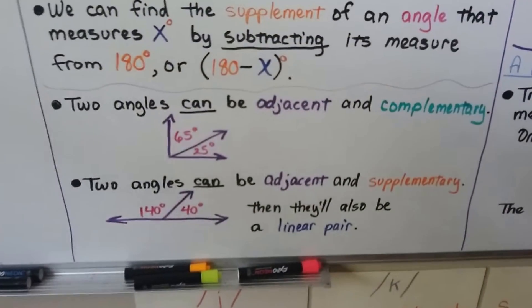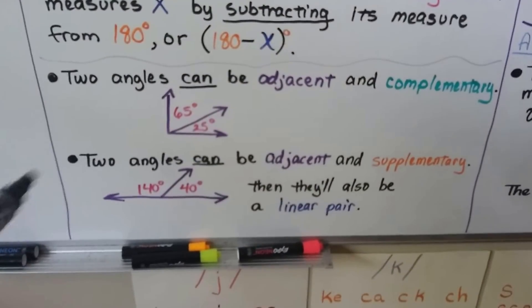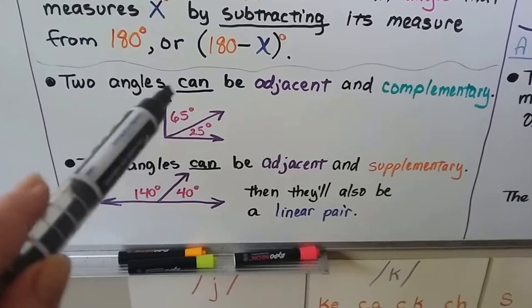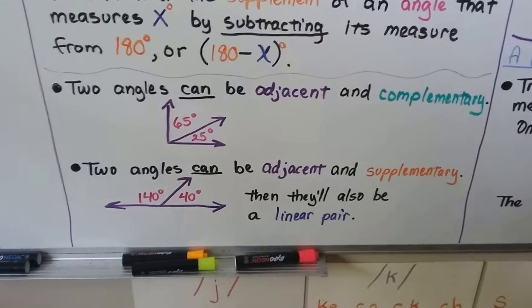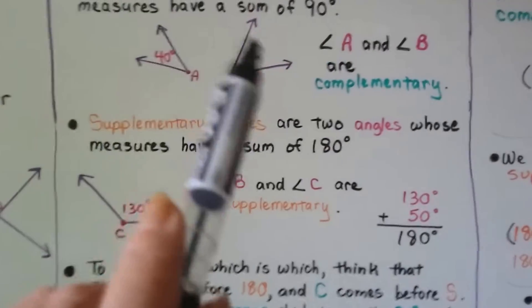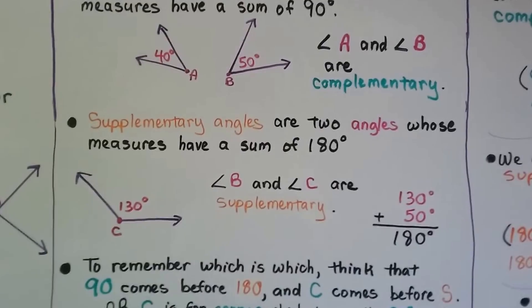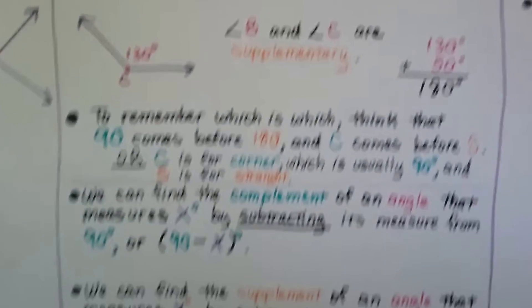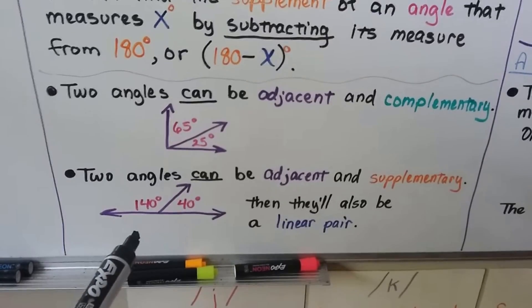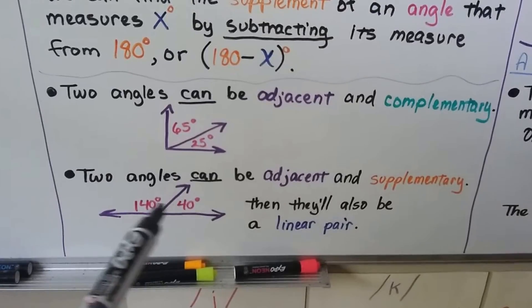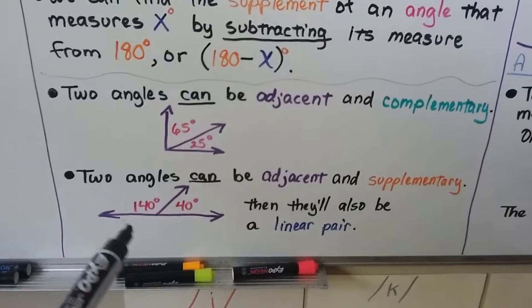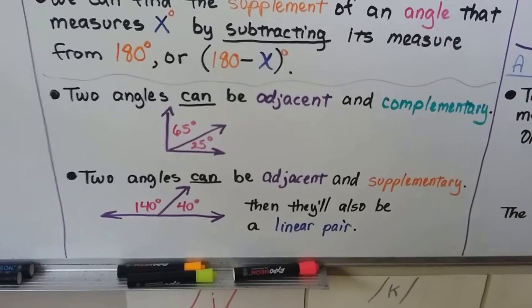Two angles can be adjacent and complementary — together they make a right angle, so they're complementary and adjacent. Two angles can also be non-adjacent and complementary. Additionally, two angles can be adjacent and supplementary: for example, 140 degrees and 40 degrees together make 180 degrees — that's supplementary — and they also form a linear pair.